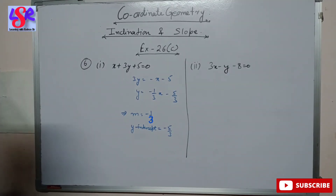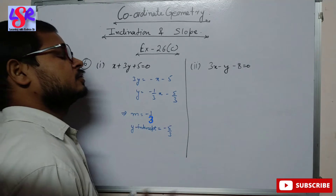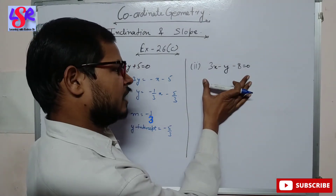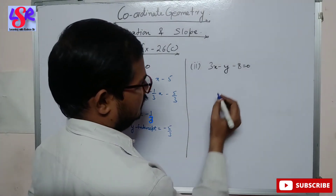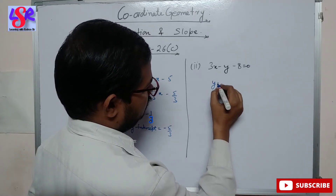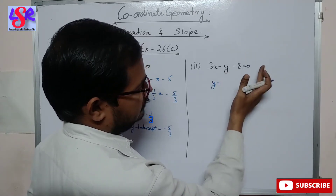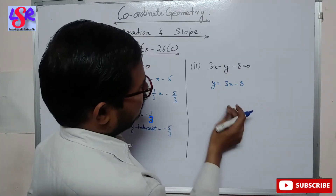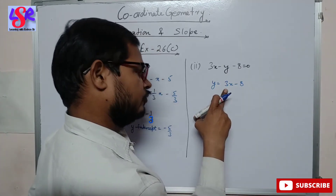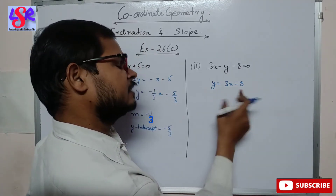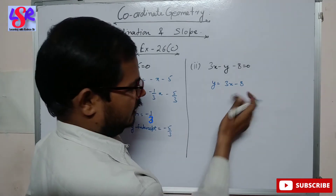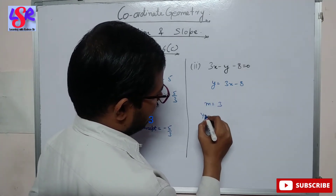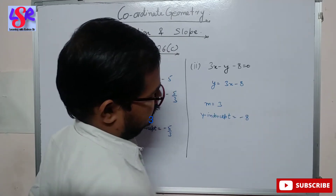Now let's see the second part of this question. Here again we have to find the slope and the y-intercept. We need to find the y equals mx plus c form. This becomes y equals 3x minus 8, in which in place of m we are having 3 and in place of y-intercept we are having minus 8. So m equals 3 and y-intercept equals minus 8.